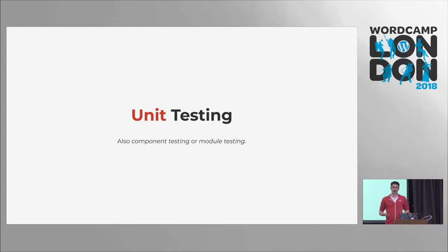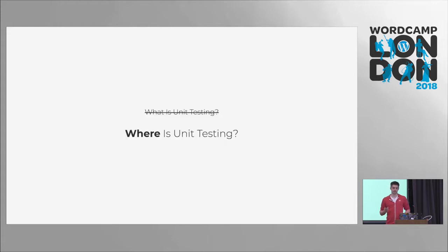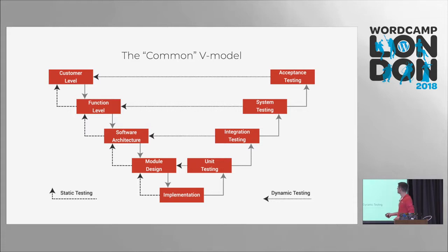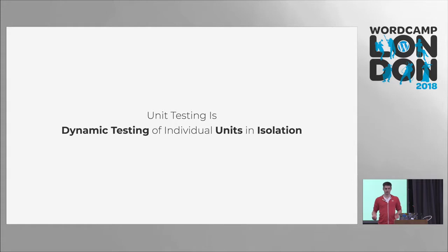Unit testing is also called component testing or module testing, and it's just one part of the testing landscape. This is the V model — I don't want to tell you how to develop software, this is just one nice overview of all the development phases. Unit testing is here, and it has a relation to the module design, the component design, the unit design, and then the implementation — the code. Unit testing is dynamic testing of individual units and you have to test them in isolation. If you're sleepy, just remember this and you're halfway good.